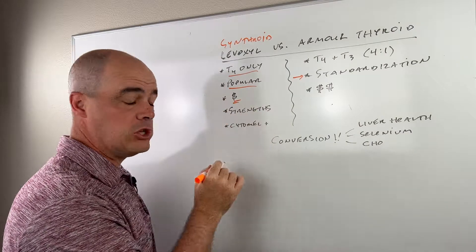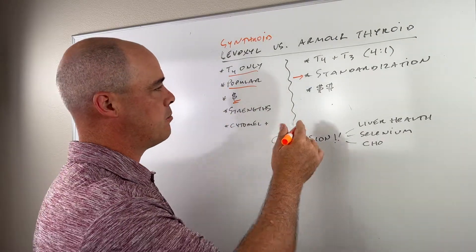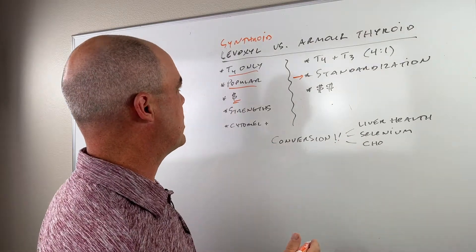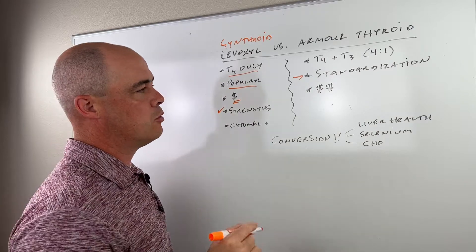Levoxel and Synthroid is going to be cheaper. Neither of them are terribly expensive, but definitely Armor Thyroid is going to be more expensive. Levoxel and Synthroid have more strengths available, which is a plus.